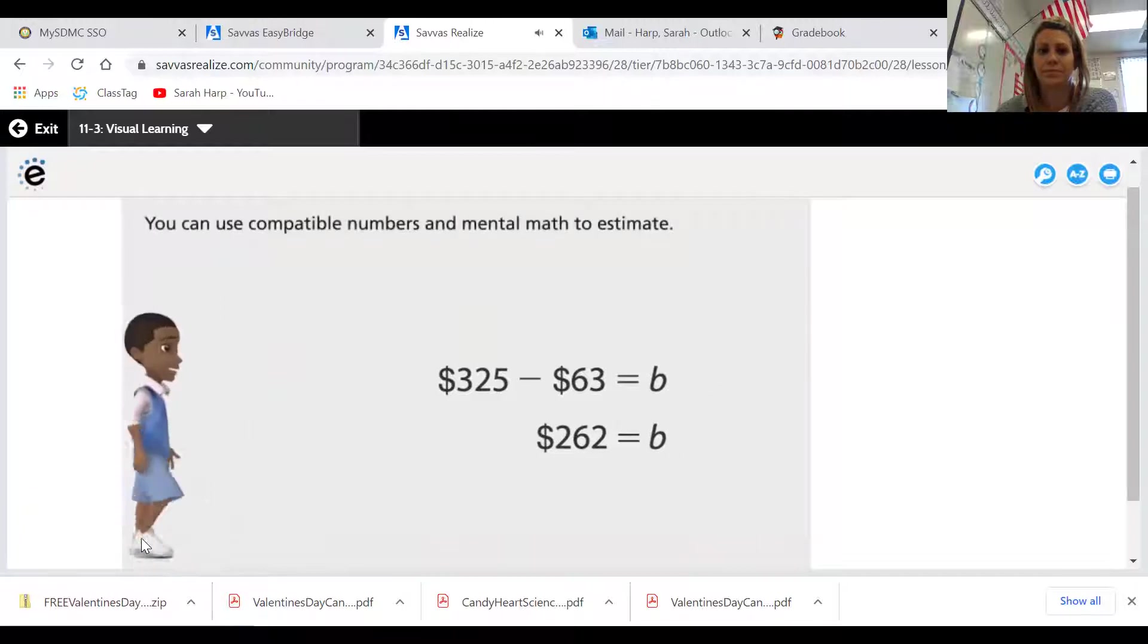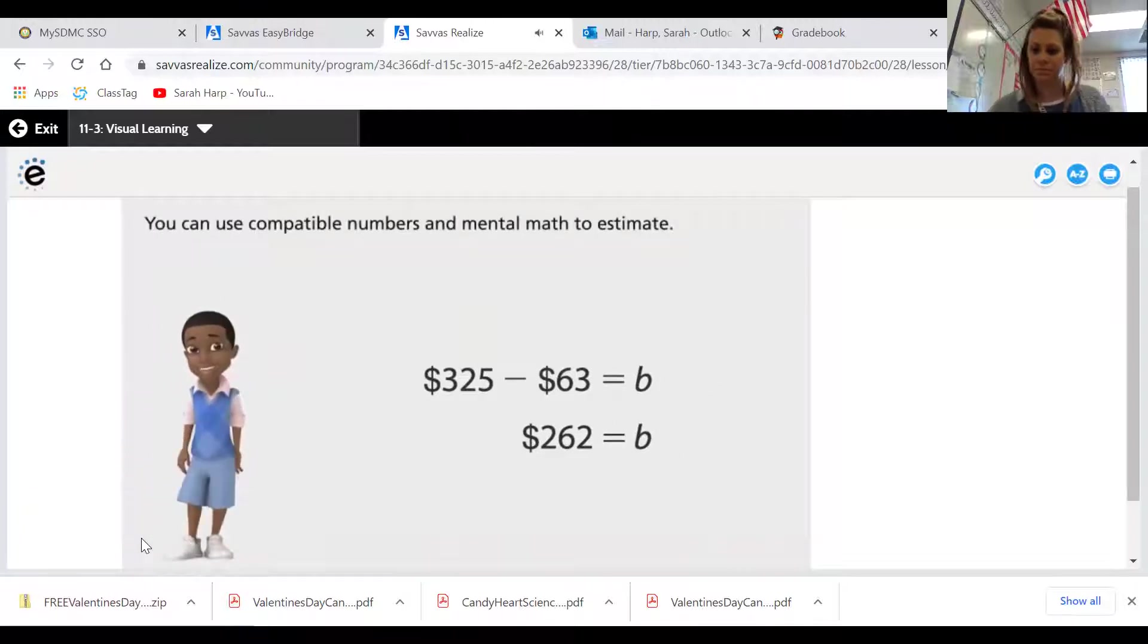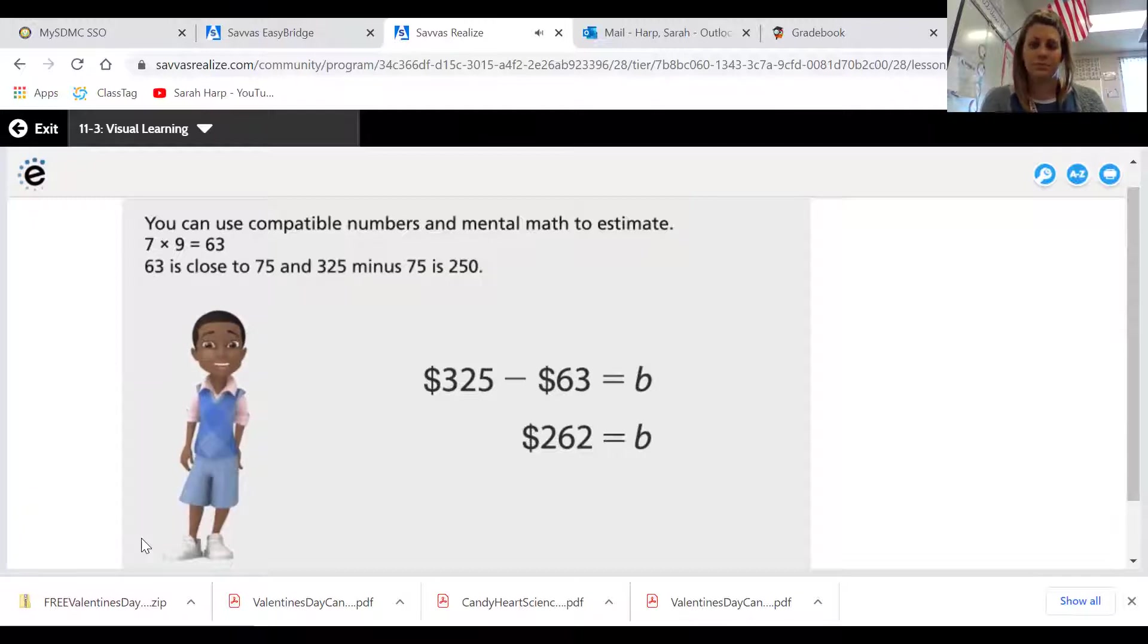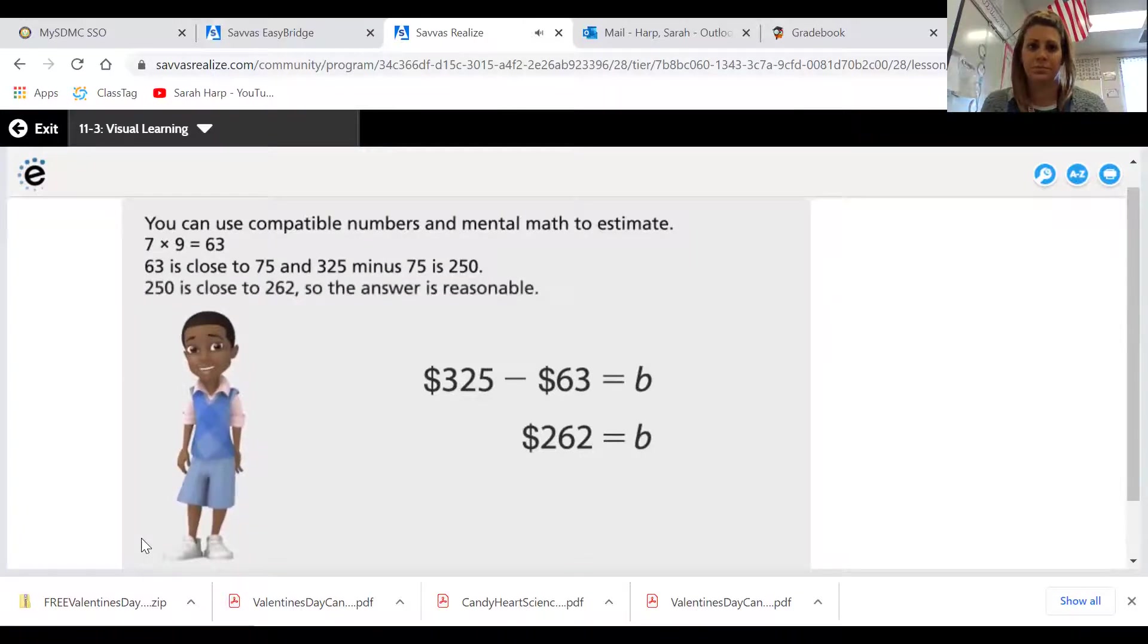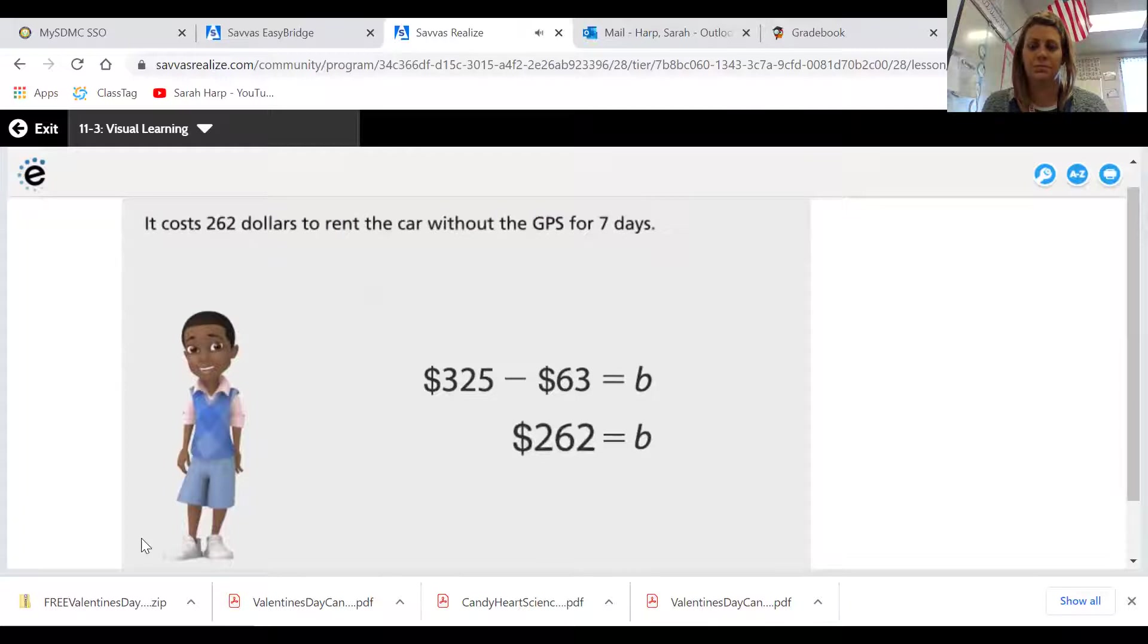You can use compatible numbers and mental math to estimate. $63 is close to $75, and $325 minus $75 is $250. $250 is close to $262, so the answer is reasonable. It costs $262 to rent the car without the GPS for seven days.